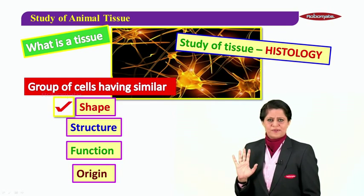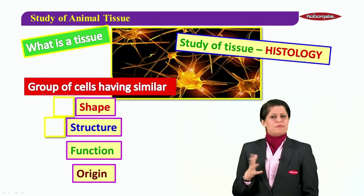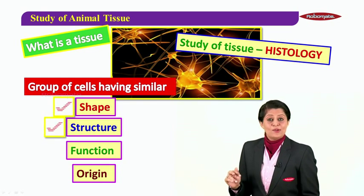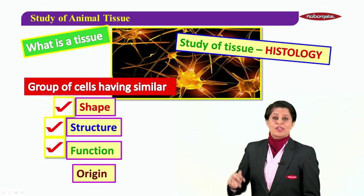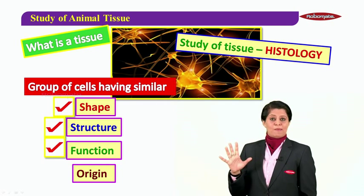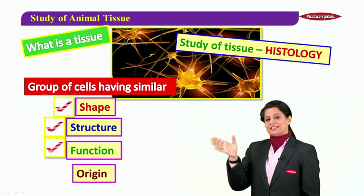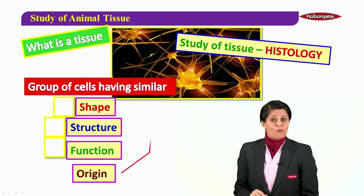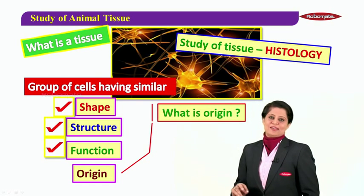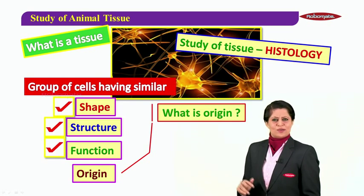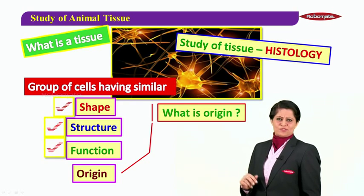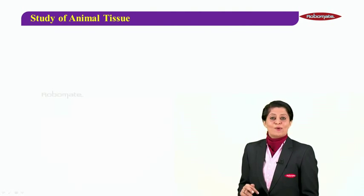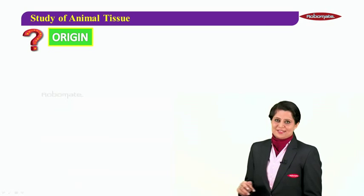Among the four important terms — shape, structure, function, and origin — we know what shape, structure, and function mean. Shape is the form of the cell, structure is its organization, and function is what the cell is exactly doing. But what do we mean by origin?